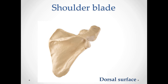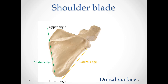On this slide we observe the dorsal surface of the shoulder blade. We can see the lateral edge, margo lateralis, which is located on the side of cavitas glenoidalis. And the medial edge faces the spine. There are the lower angle, the upper angle, and the lateral angle, in which the articular cavity of cavitas glenoidalis is located.